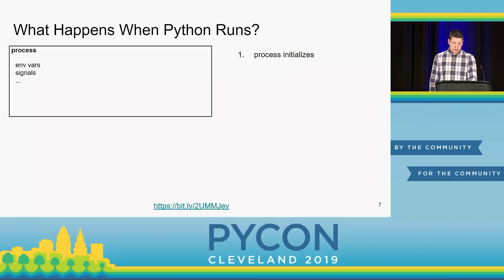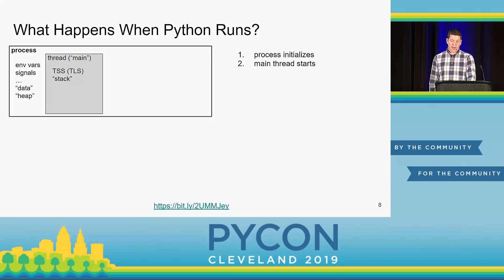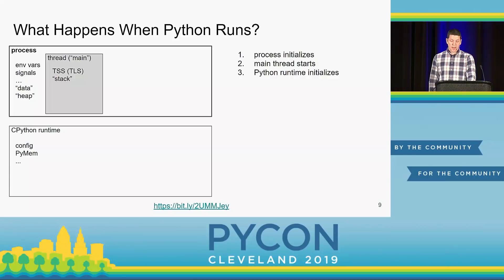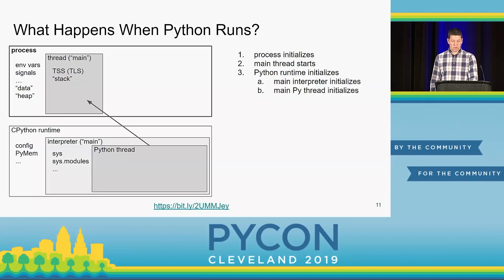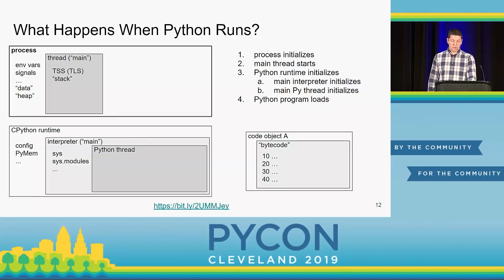The next bunch of slides are a less-than-exact representation, but good enough for us. When a process starts, there are certain resources global to the process. Each OS thread has certain exclusive resources. The runtime is effectively everything Python-related in the process, and an interpreter is all runtime state that Python threads share in common. The Python thread is associated with the OS thread and keeps thread-specific runtime state. Scripts, modules, functions, classes, and a number of other things compile to code objects.